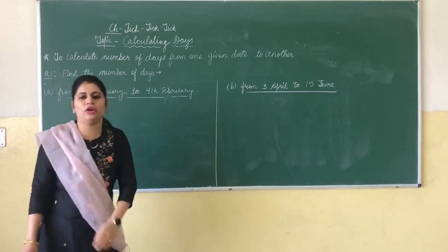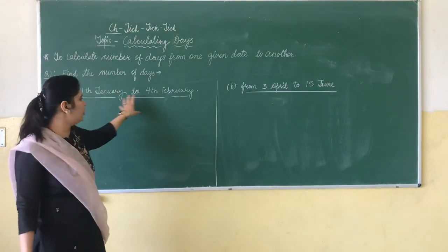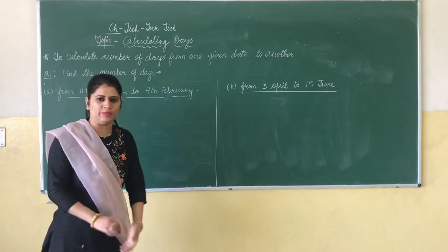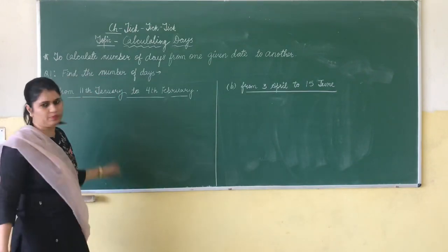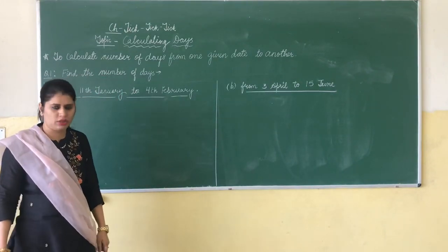Find the number of days from 11th January to 4th February. We need to find out the number of days between 11th January to 4th February. So 11th January, how many days are in January? 31 days.